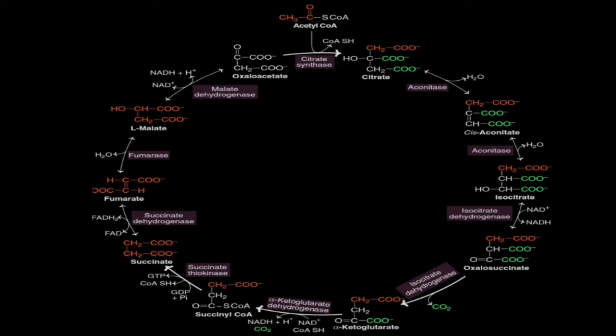Succinate is converted into fumarate by succinate dehydrogenase; succinate is oxidized and FAD is reduced to FADH2. Fumarate is then converted into malate by fumarase. Finally, malate is oxidized back to oxaloacetate by malate dehydrogenase, and NAD is reduced to NADH.